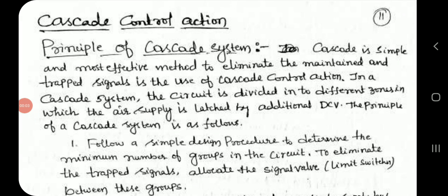Cascade control action. Principle of cascade system: Cascade is a simple and most effective method to eliminate the maintained and trapped signals. This is done by the use of cascade control action. In a cascade system, the circuit is divided into different zones in which the air supply is latched by additional direction control valves.